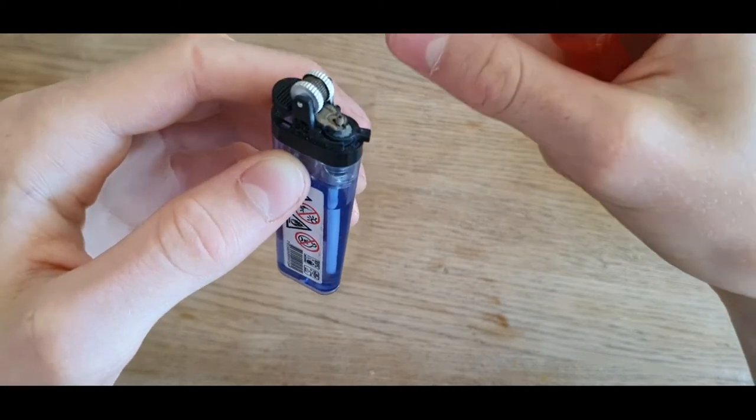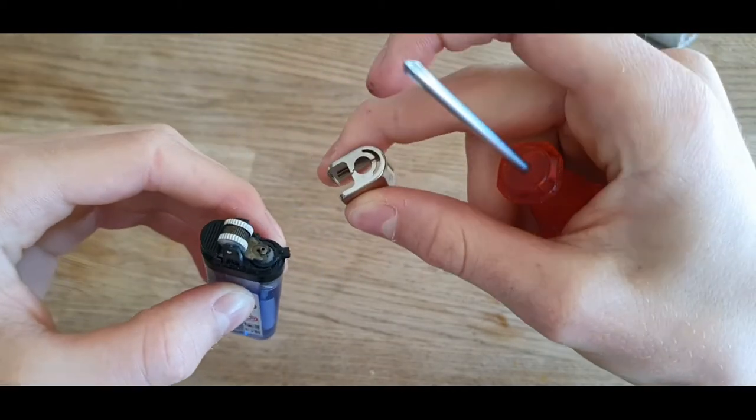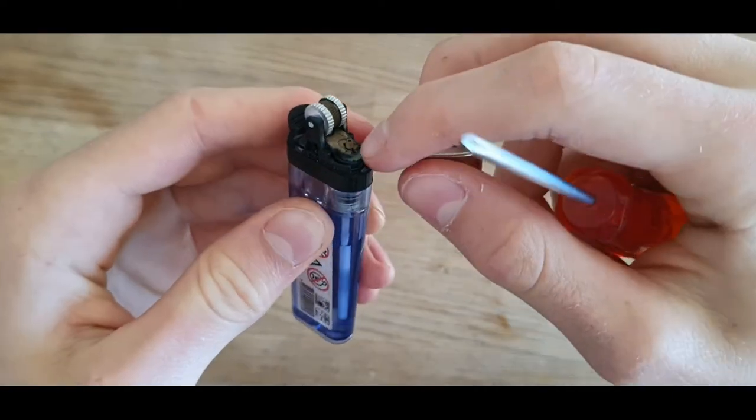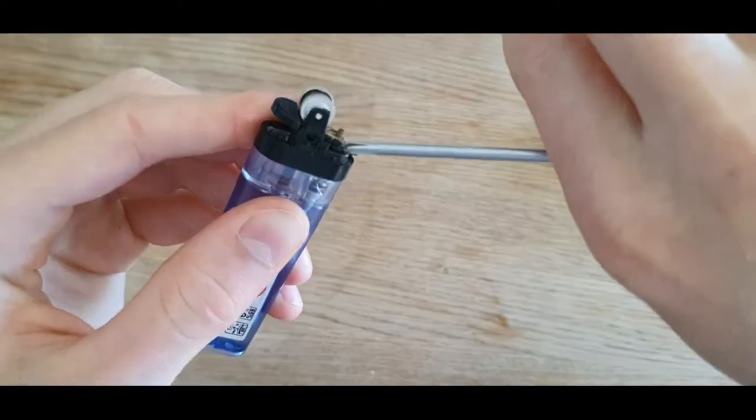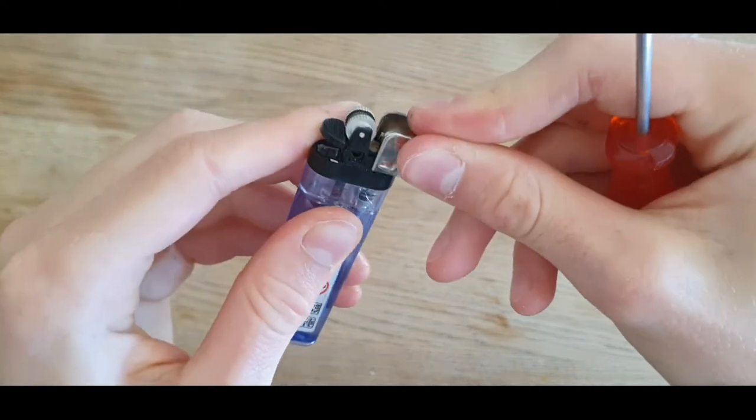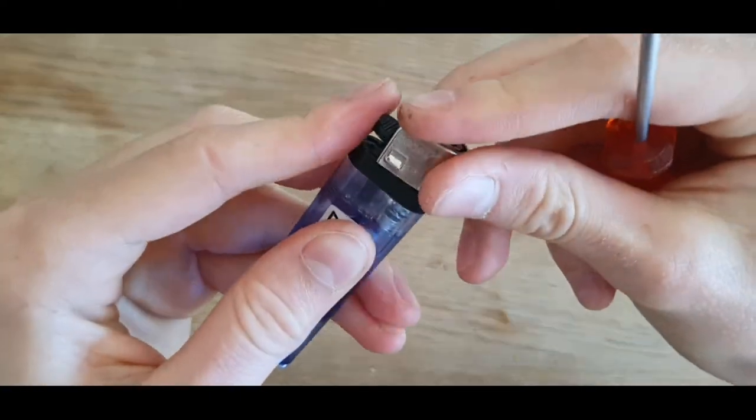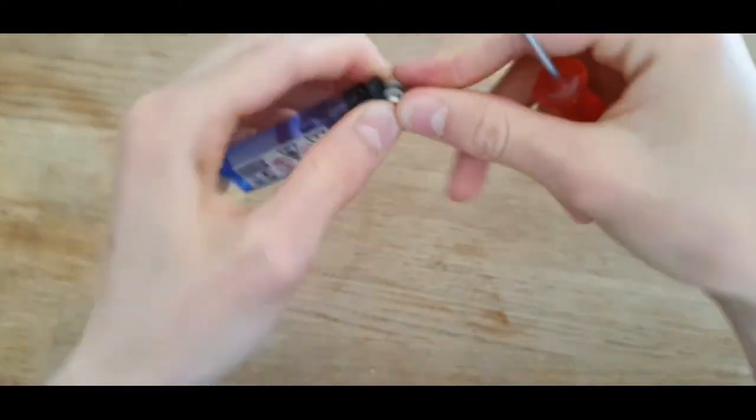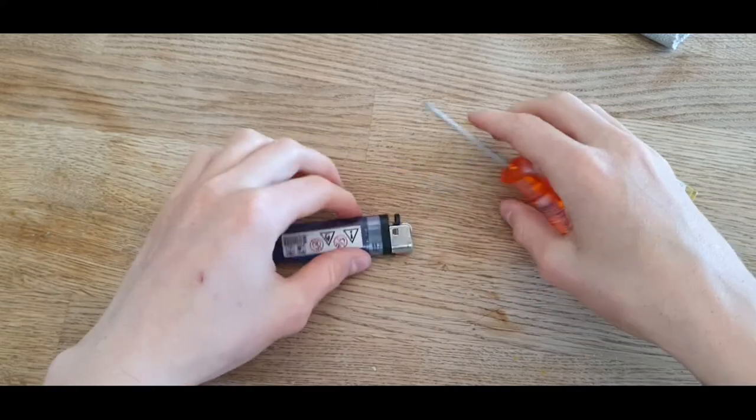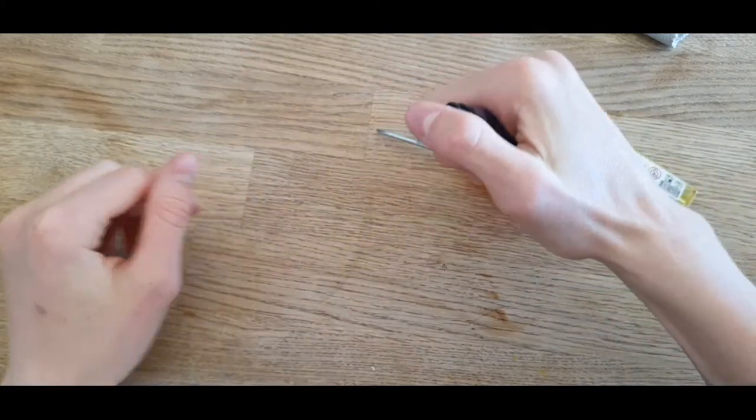Then you're going to take back the cover like this and squeeze it a little bit so it can fit on again. Make sure this is on good. Then you're just going to click it on and squeeze it against the table. And now we got a jet lighter.